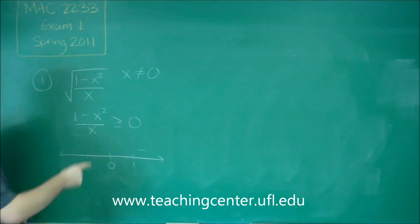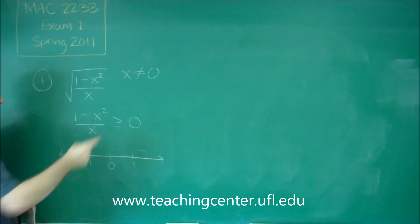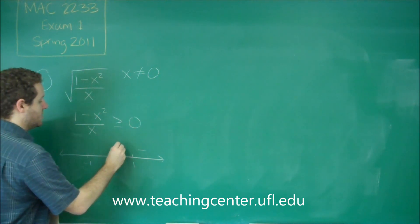Something in between 0 and 1, we have positive on the bottom, this is going to make the top positive now, because something in between 0 and 1 squared is going to be less than 1. So this is positive.